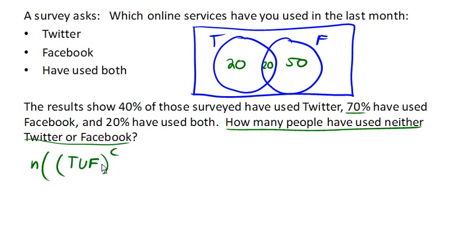Now using the Venn diagram, we can answer that pretty easily. We've got 50, 60, 70, 80, 90% of people here in the combination of the two sets,